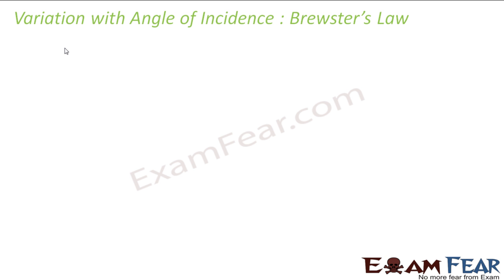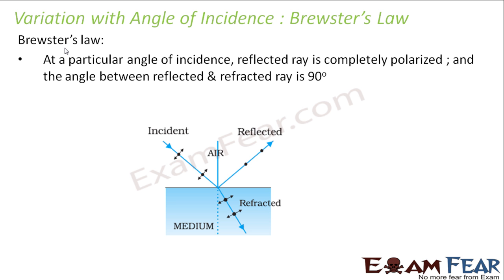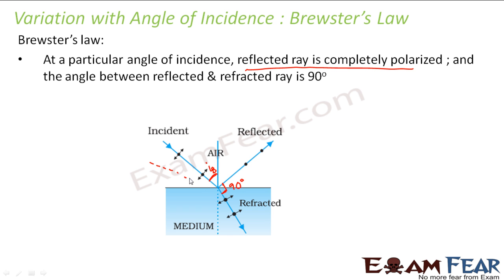Now we talk about Brewster's law, which describes the variation in polarization with the angle of incidence. At a particular angle of incidence called Brewster's angle, the reflected ray is completely polarized. At this Brewster's angle, the angle between the reflected and refracted ray is 90 degrees. If you change this angle — tilt it a little more or less — the reflected ray again becomes partially polarized, and more unpolarized waves enter the medium. So there is this specific value of angle of incidence for which the reflected wave is completely polarized; everywhere else, both rays are partially polarized.